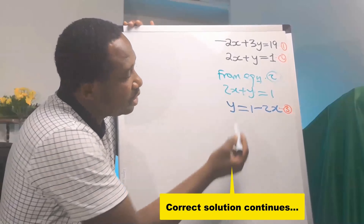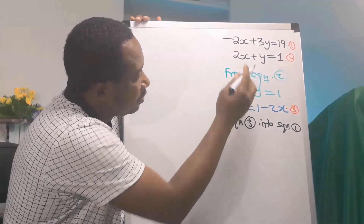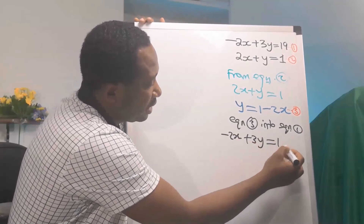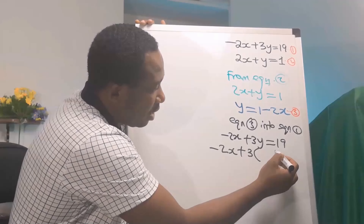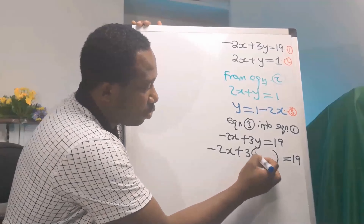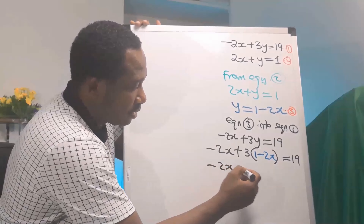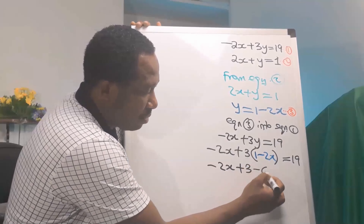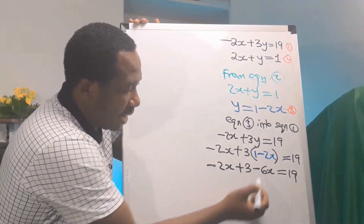I will substitute equation 3 into equation 1. From equation 1 we have minus 2x plus 3y equals 19. y has a value from equation 3: y is 1 minus 2x. So we have minus 2x plus 3 times (1 minus 2x) equals 19. Expanding: 3 times 1 is 3, and 3 times minus 2x gives minus 6x.